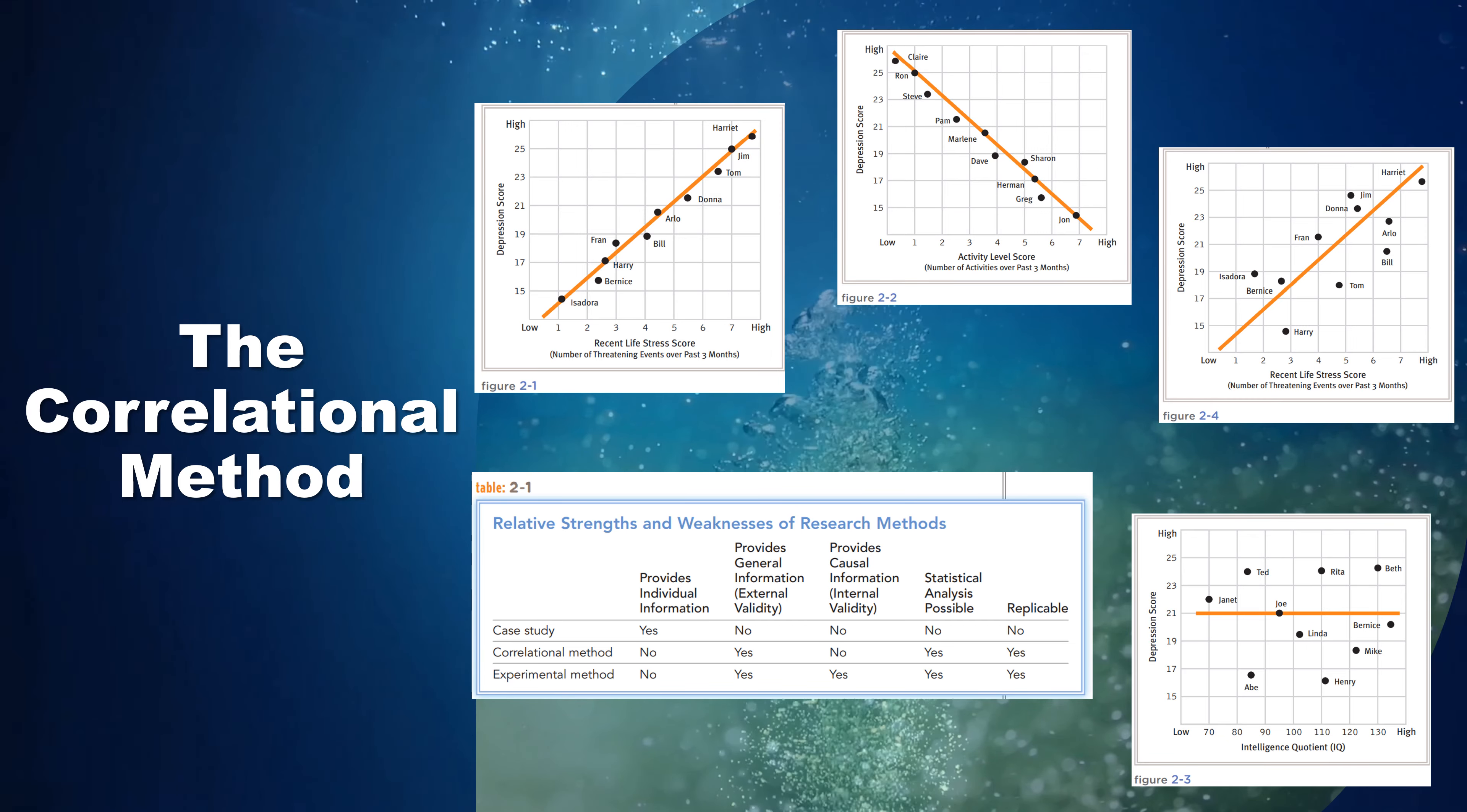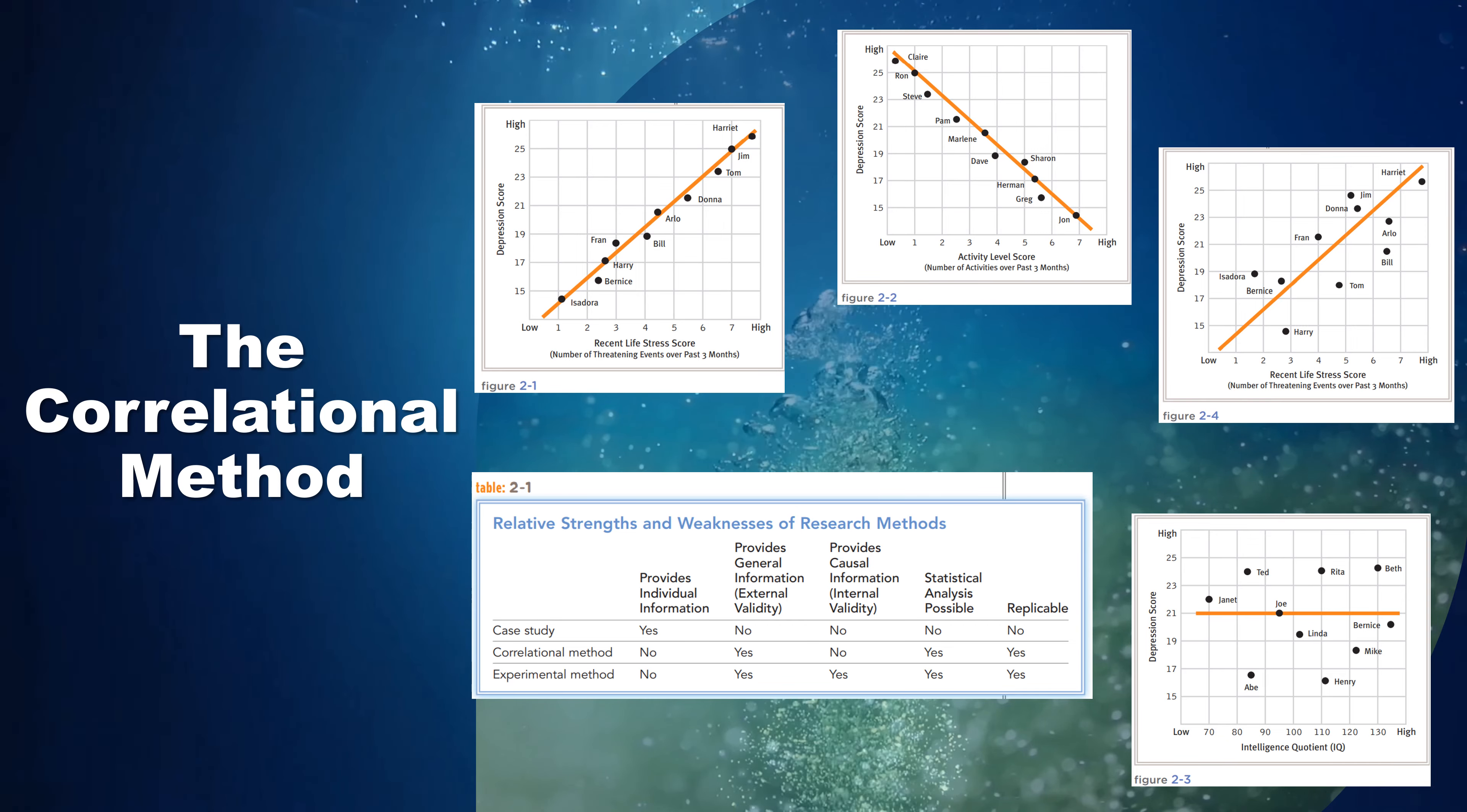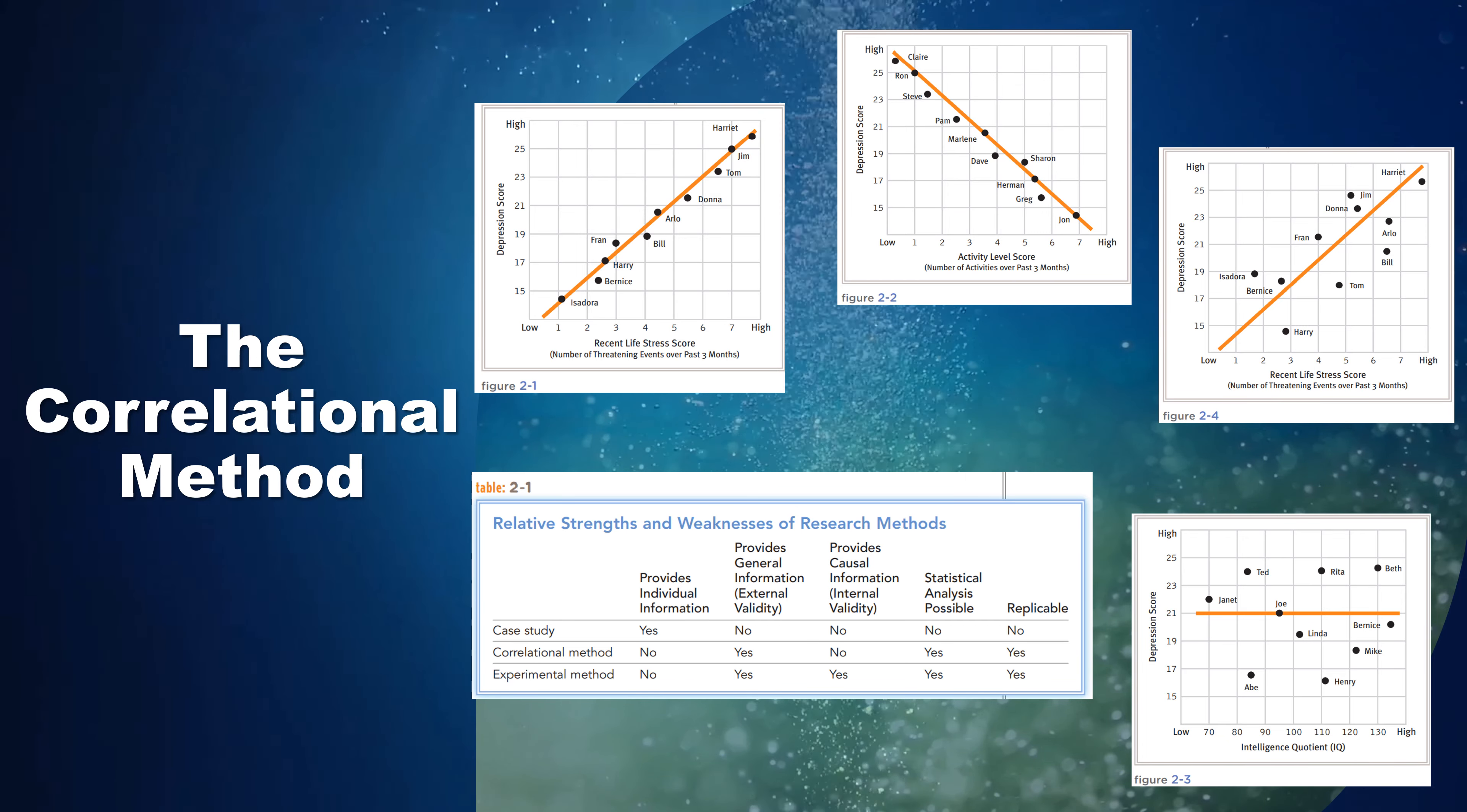Over the past 40 years, clinical researchers throughout the United States have worked on one of the largest epidemiological studies of mental disorders ever conducted, called the Epidemiologic Catchment Area Study. They have interviewed more than 20,000 people in five cities to determine the prevalence of many psychological disorders and the treatment programs used.